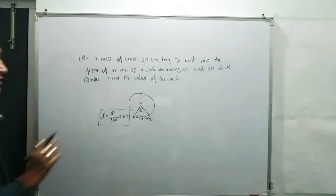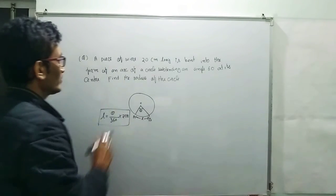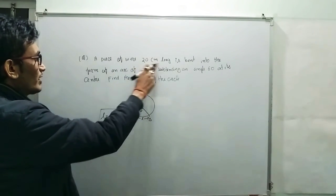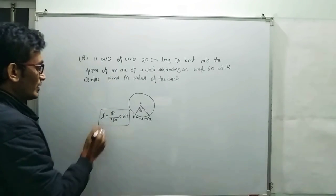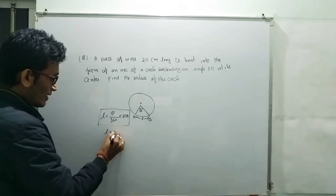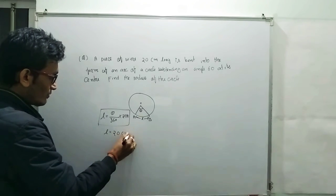So using this formula we can easily solve this question. Here a piece of wire is 20 centimeter long is bent into a form of an arc, that means here L is 20, it is given L is 20